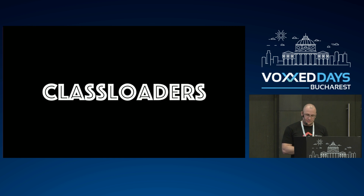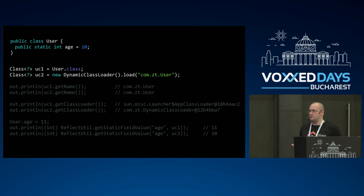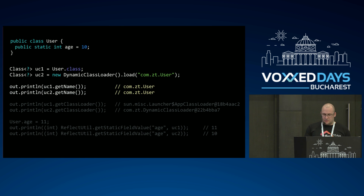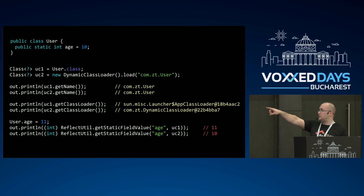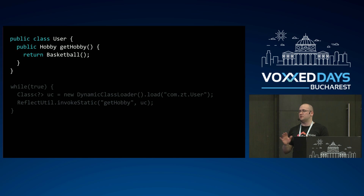Let's talk about class loaders a little bit — just the basics before we proceed to the demo. Imagine we have a class with one field, and we can load it from different class loaders — that's the isolation, where you can isolate a class with the same name but it will have different identity within the same application. Same name, different class loader. If we change something for one of them, it only changed for one of them, not the second one — even with a static field.